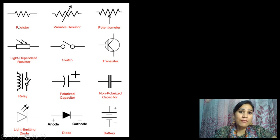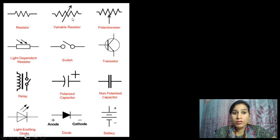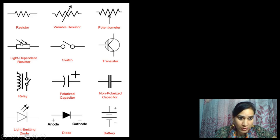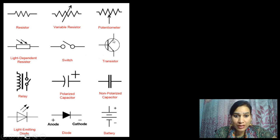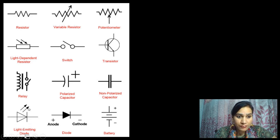These are examples of resistances: simple resistance, variable resistance, potentiometer — this is how we can denote them. These are the symbols. This is light dependent resistance — the arrow shows light falls on it. This is a switch. This is a transistor — transistor can be NPN or PNP. Relay — this is a symbol for relay. This is polarized capacitor. This is non-polarized capacitor. This is light emitting diode — emitting means the arrow is outwards. Then simple diode. Then battery.